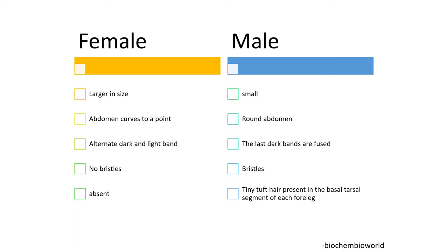To distinguish between the female and the male fly: females are larger in size compared to males. The abdomen of the female comes to a point, whereas in the male the abdomen is round. There are alternate dark and light patches in females.